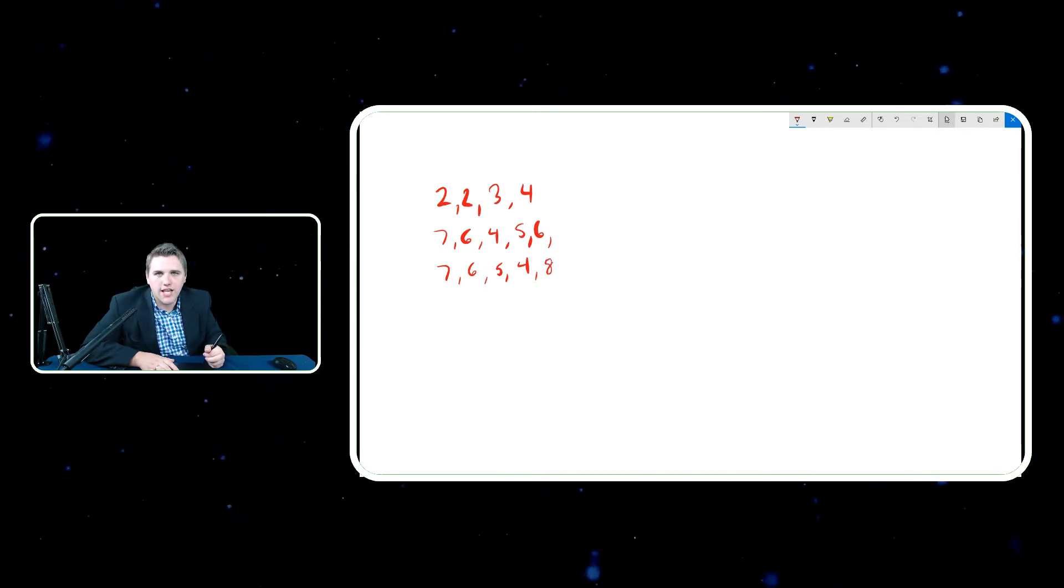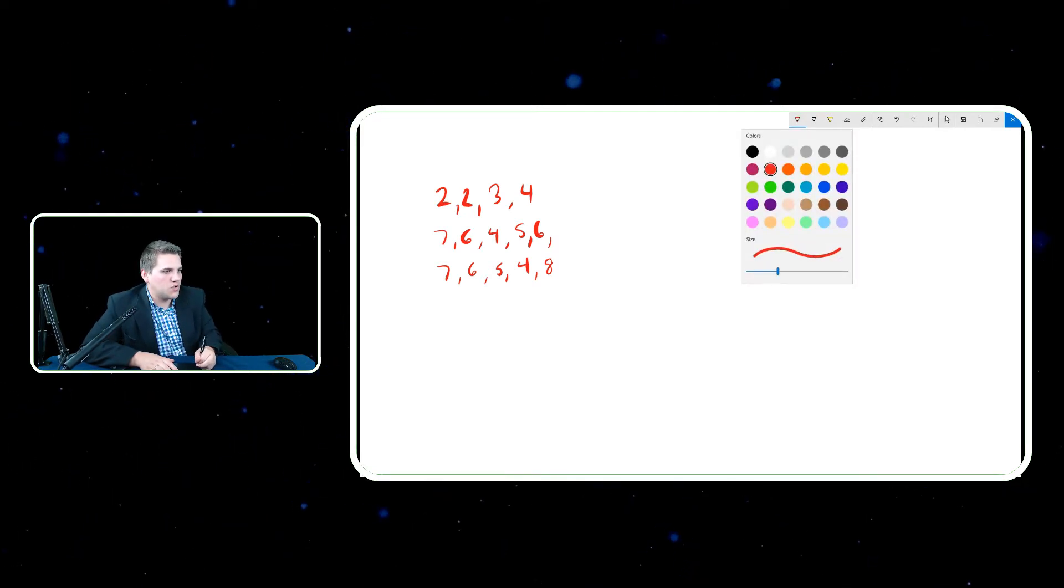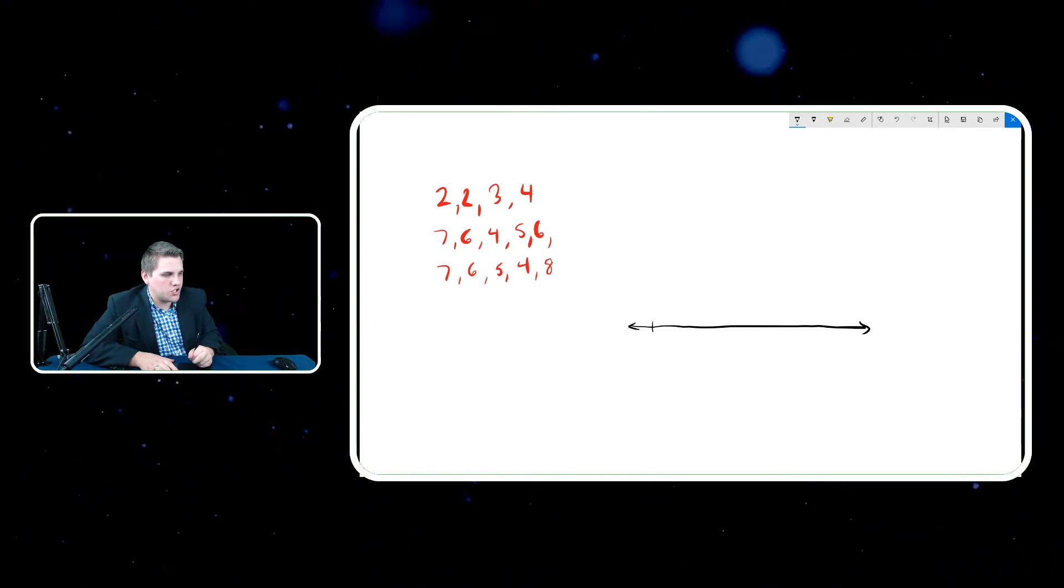So let's say we wanted to organize this data with a histogram. Well, in order to do that, first we need to draw our horizontal variable. That's what I would start with every single time. Now, we're going to start with the number two because that's the lowest, although you can start with whatever you want. And then we'll go by twos. So we'll go two, then four, then six, and then eight, and then ten.